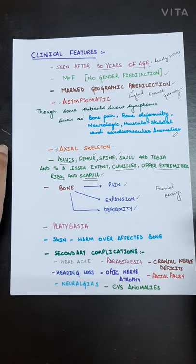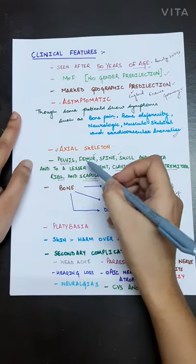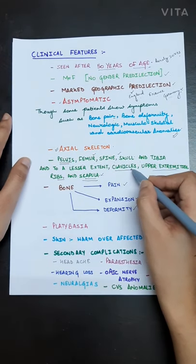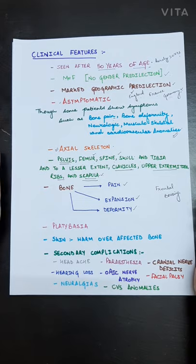The bones that are affected more commonly are pelvis, femur, spine, skull and tibia, and to a lesser extent the clavicles, upper extremities, ribs and scapula.